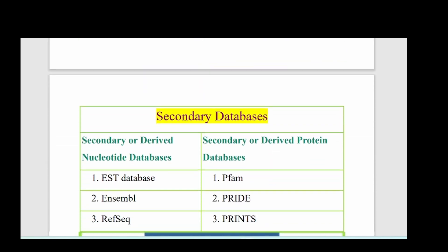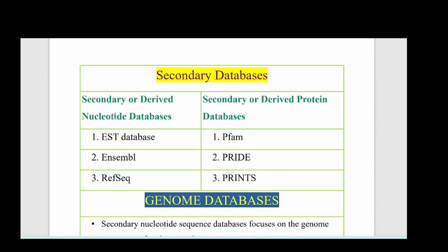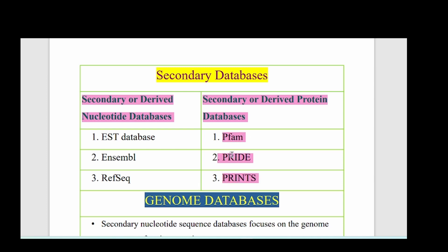Secondary or derived nucleic databases include EST database, Ensembl, and RFSEC. Secondary or derived protein databases include PFAM, PRIDE, and PRINTS.